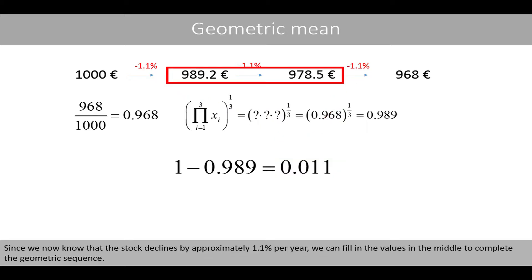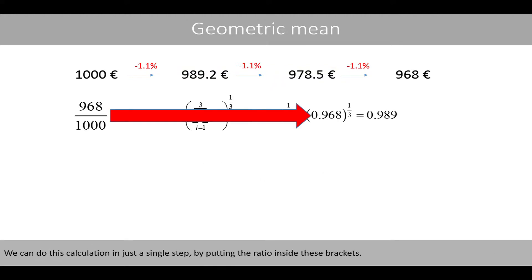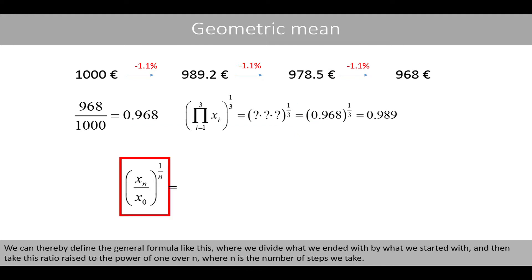Since we now know that the stock declines by approximately 1.1% per year, we can fill in the values in the middle to complete the geometric sequence. We can do this calculation in just a single step by putting the ratio inside these brackets. We can thereby define the general formula like this, where we divide what we ended with by what we started with and then take this ratio raised to the power of 1 over n, where n is the number of steps we take.